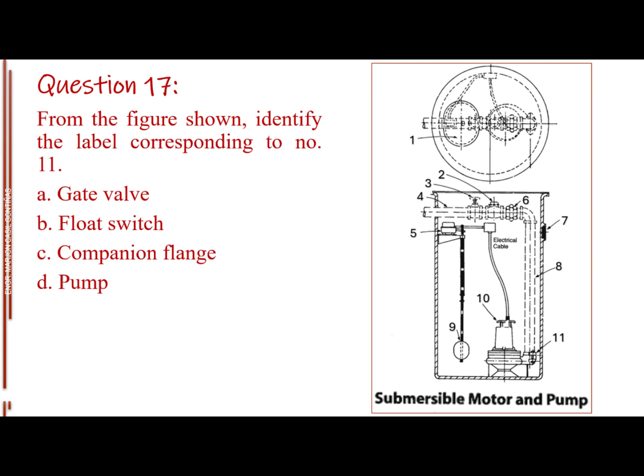Question number 17. From the figure shown, identify the label corresponding to number 11. Letter A, gate valve. Letter B, float switch. Letter C, companion flange. Letter D, pump.